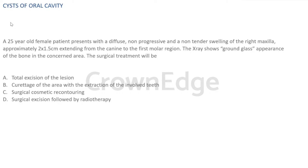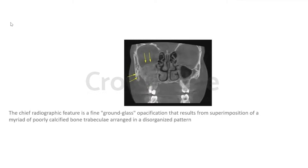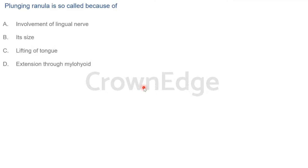Let me show you a picture of the ground glass opacification in the right maxilla. As you can see, the lesion is not well circumscribed — it is diffuse with ground glass opacification caused by superimposition of poorly calcified bony trabeculae. This pattern is pathognomonic for fibrous dysplasia. It is also called orange peel appearance.